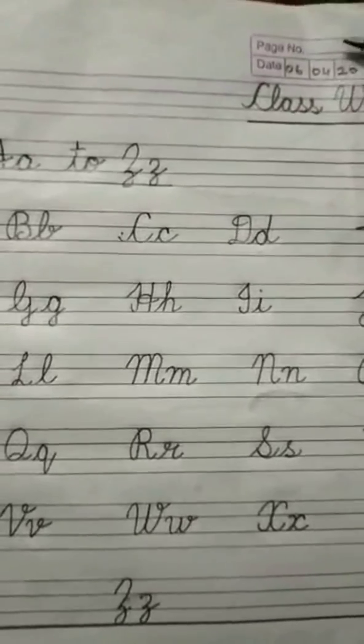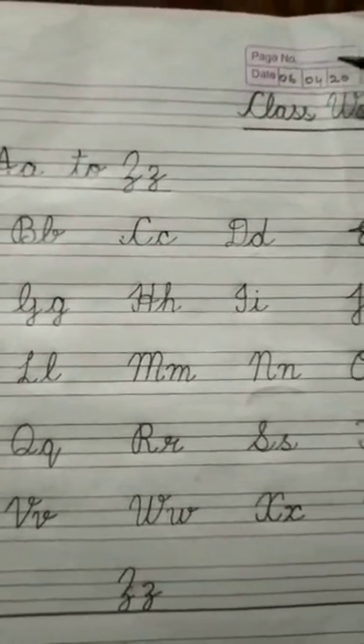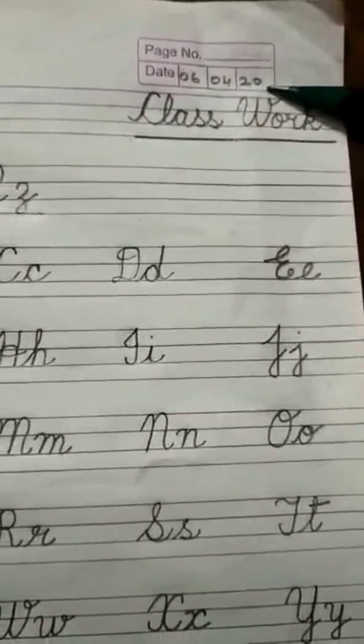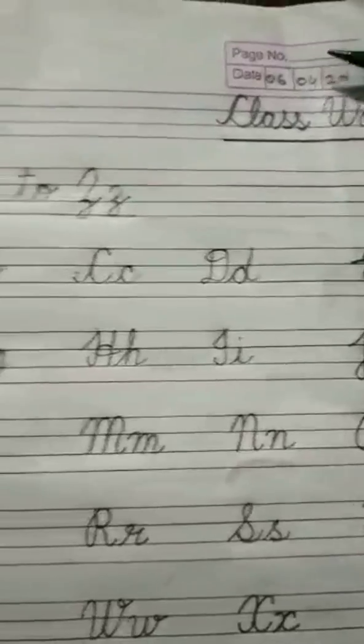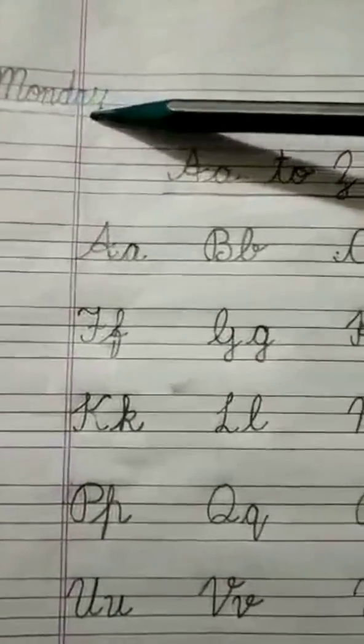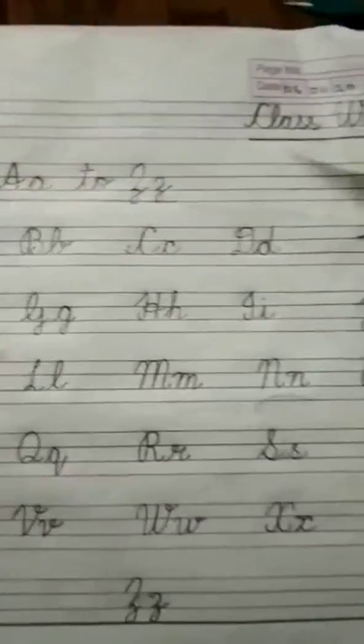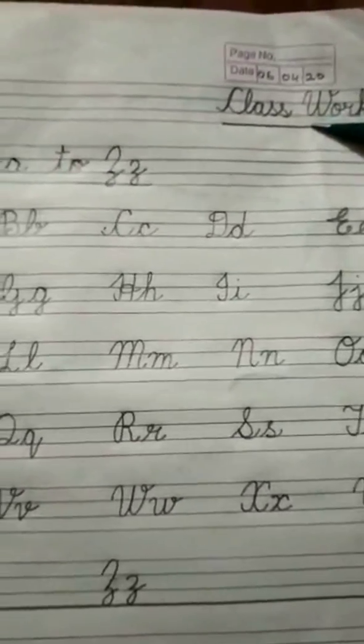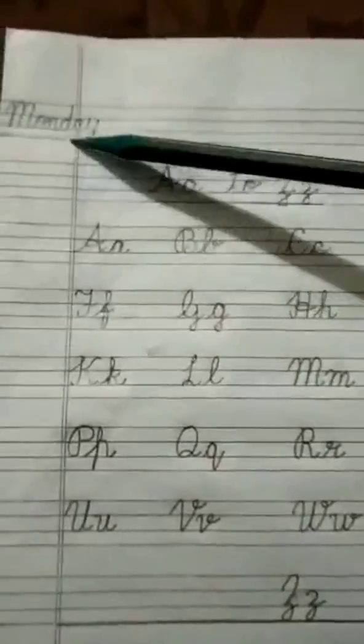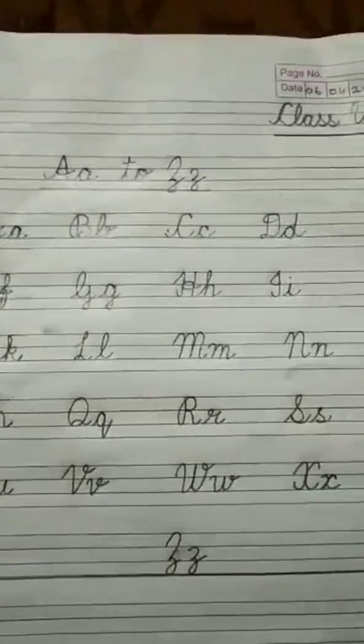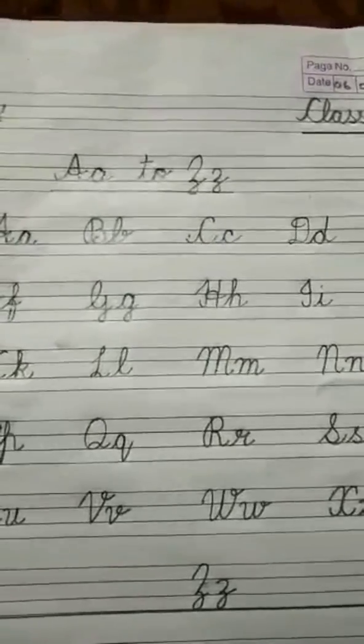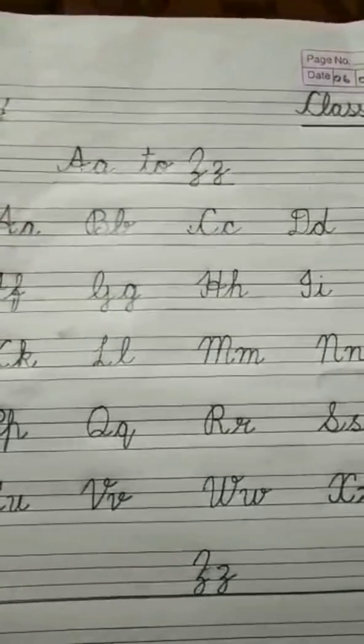First you will write the page number over here. Then you will write today's date, that is 6th of April 2020. If you do not have a box over here, you can write the date over here and then below that you can write the date. And as I have told you earlier, the classwork will be on the right hand side. After you write the classwork and the day, kindly ensure that you draw the lines with a scale. Do not draw any line without scale.